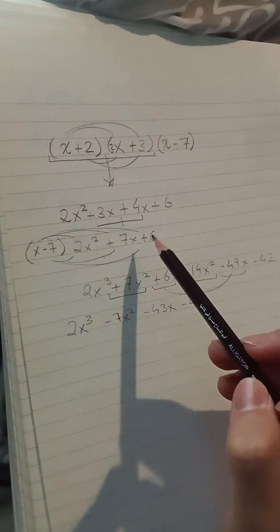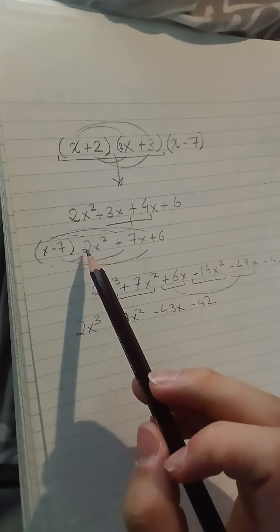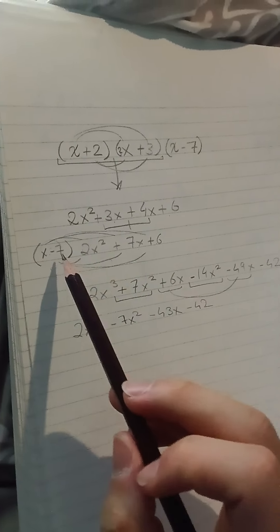Combine like terms from here. 3x plus 4x is going to be 7x, 6 comes down, and 2x squared. Now, take the third bracket and plug it into the equation.